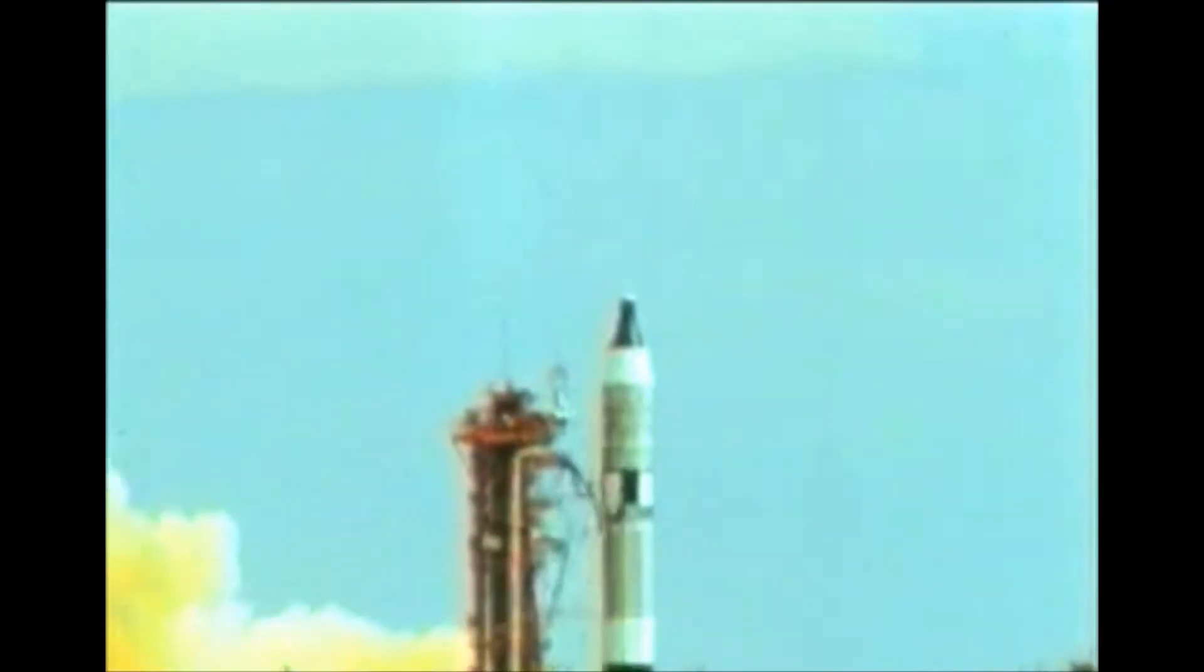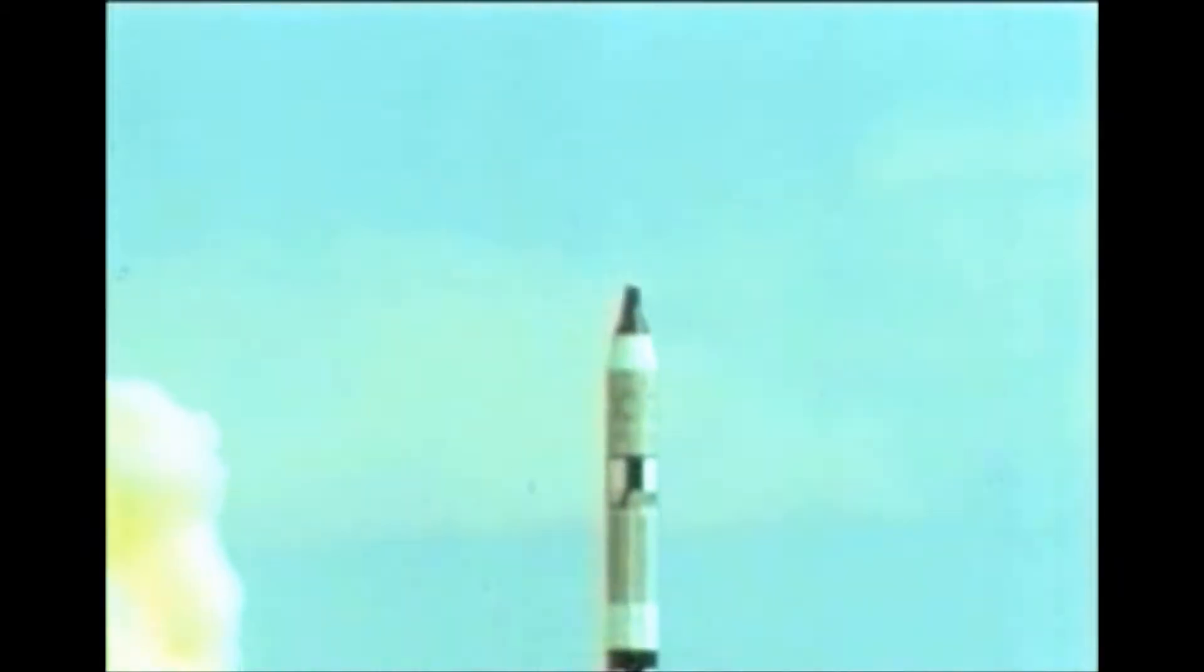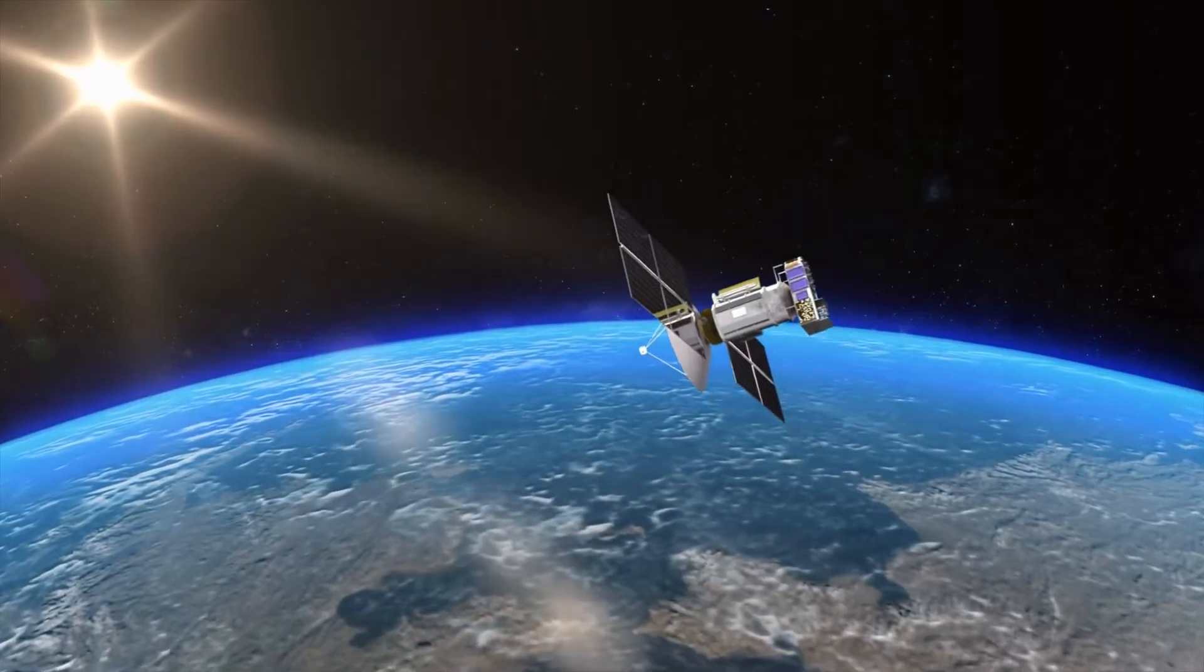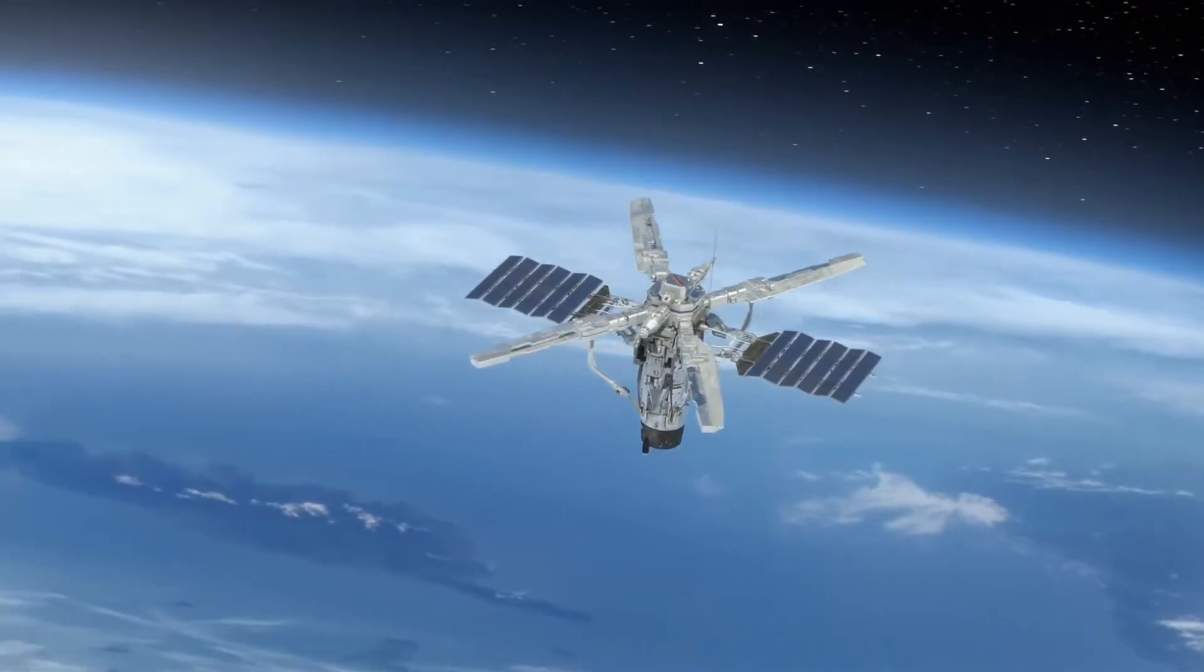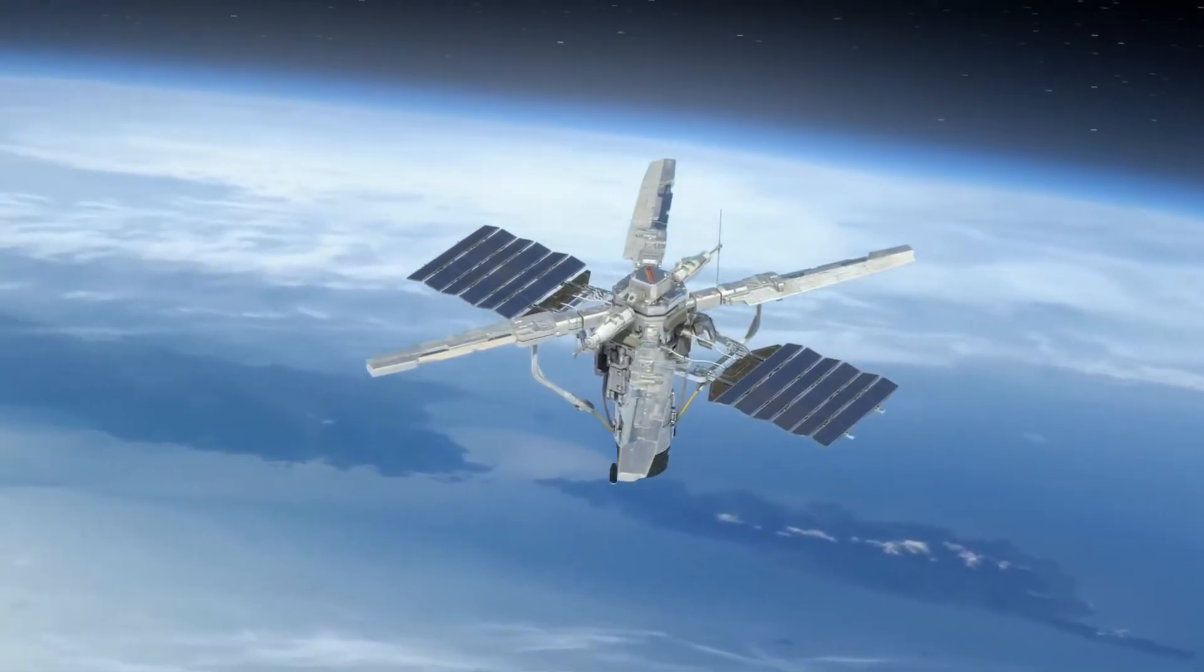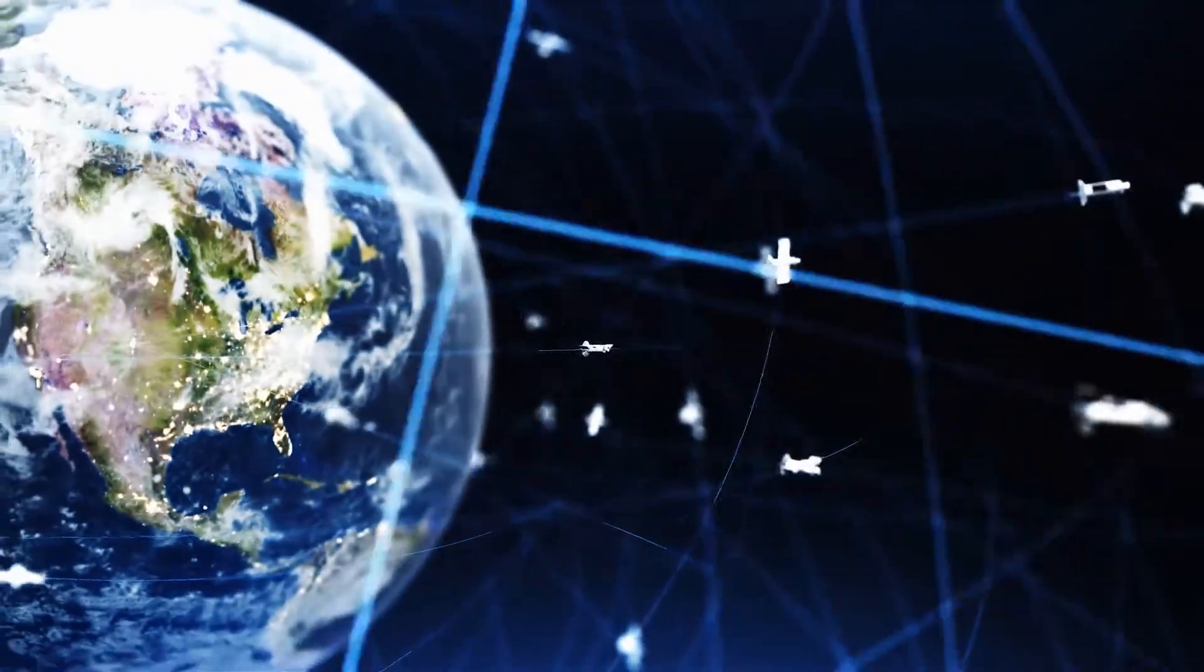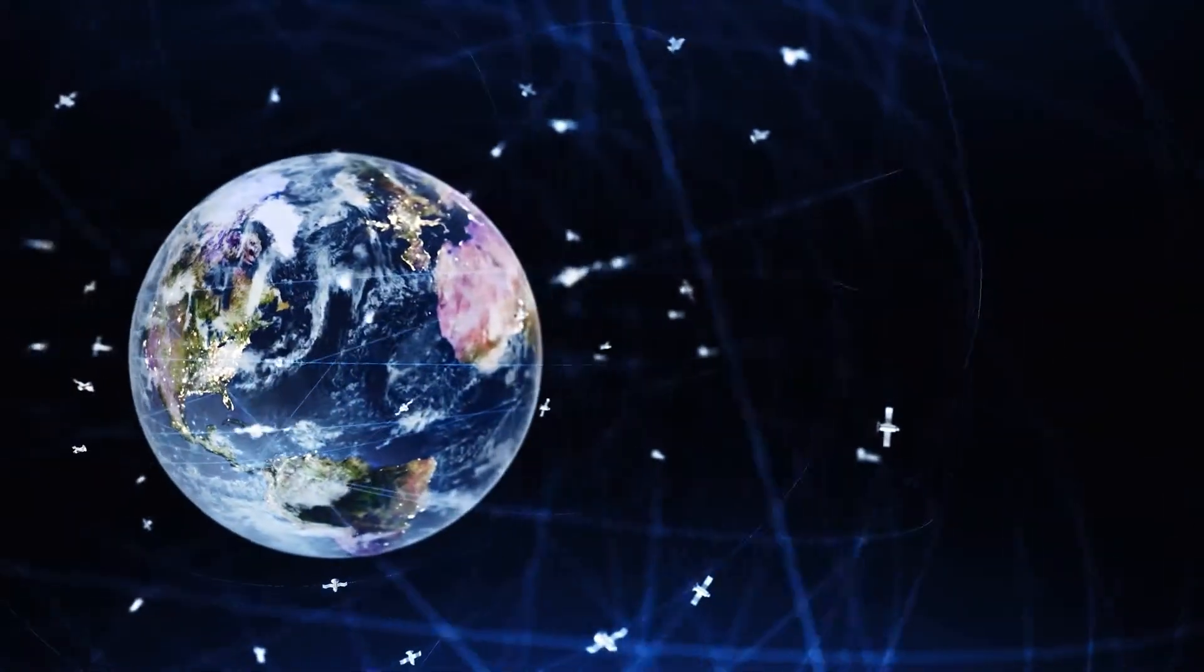The journey of satellites begins with a rocket launch. Once in space, it enters orbit, a carefully calculated path around Earth that ensures the satellite remains in motion around the planet. Satellites orbit Earth in different ways based on what their mission is.